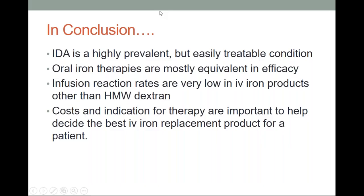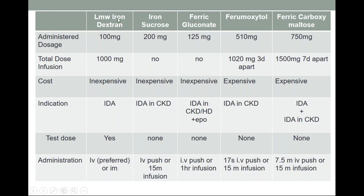Here is a table showing the different forms of IV iron available: low molecular weight iron dextran, iron sucrose, ferric gluconate, ferumoxytol, and ferric carboxymaltose. Indications include pure iron deficiency anemia or CKD patients. Low molecular weight iron dextran may need a test dose, but the newer formulations do not require a test dose and are proven to have very minimal side effects or anaphylactoid reactions.